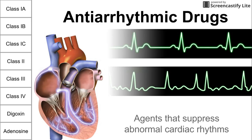We know it's atrial fibrillation because we see random activity going on in between the QRS complexes, and the QRS complexes are irregularly spaced apart — they don't happen at a regular interval. If we administer an anti-arrhythmic drug to a person with atrial fibrillation, we have the potential to bring them back to normal sinus rhythm. This is one example of fixing an arrhythmia with an anti-arrhythmic drug, and we're going to talk about the different classes here.